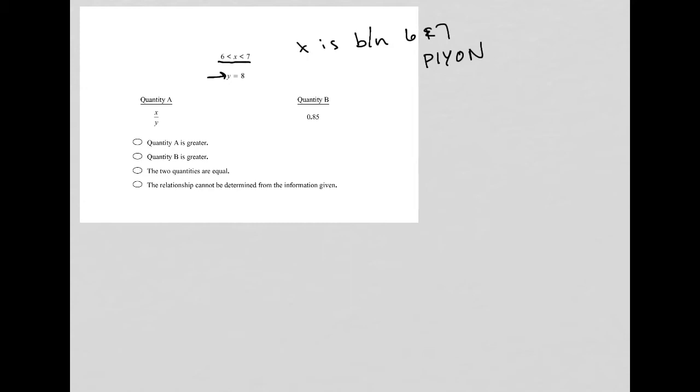But let's just say it's right in between. So let's say it's 6 and a half. So x over y would be 6.5 over 8. And let's see what happens. If I put that in my calculator, which you can't see, but obviously on the GRE, you'd have your calculator on screen with you. When I divide 6.5 by 8, I get 0.8125.